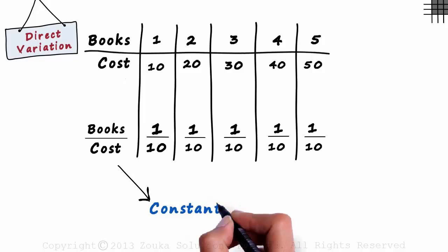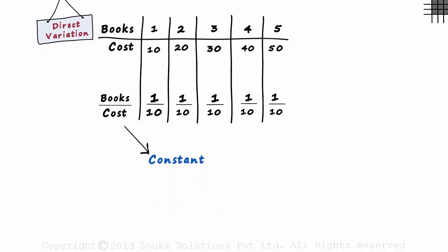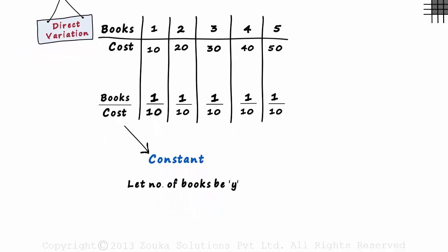Let's understand it in terms of variables. Let the number of books be y and let the cost of books be x. This ratio will then be y by x. Hence, we can write y by x is equal to 1 by 10 which is a constant.